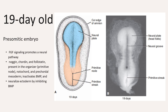But why must BMP4 be inhibited before neural induction can happen? It is because if BMP4 is expressed in a gastrulating embryo, the ectoderm is induced to form epidermis and the mesoderm will form intermediate and lateral plate mesoderm. So in the absence of BMP4, the ectoderm can become a neural tissue.